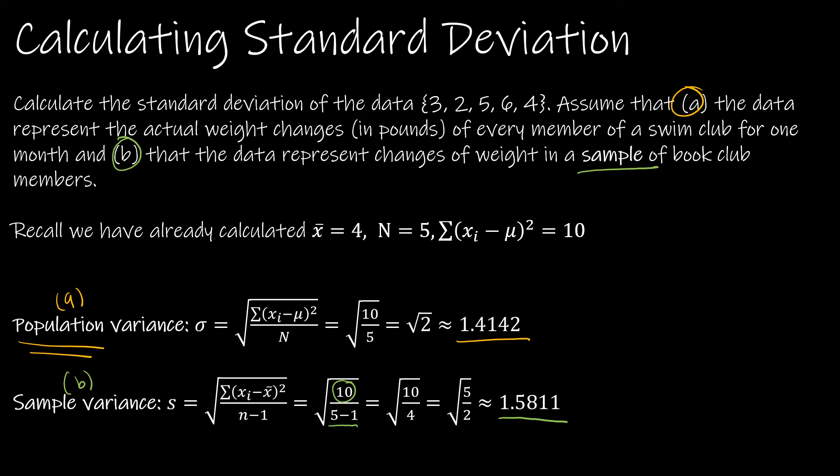A common question is: why is there a difference between the population and sample formulas? For a sample, the values are not as precise, so using n−1 gives a slightly larger spread because we're a little less certain about how far our data values are. This is how far we would expect a typical data value to be — it's sort of our new ruler.